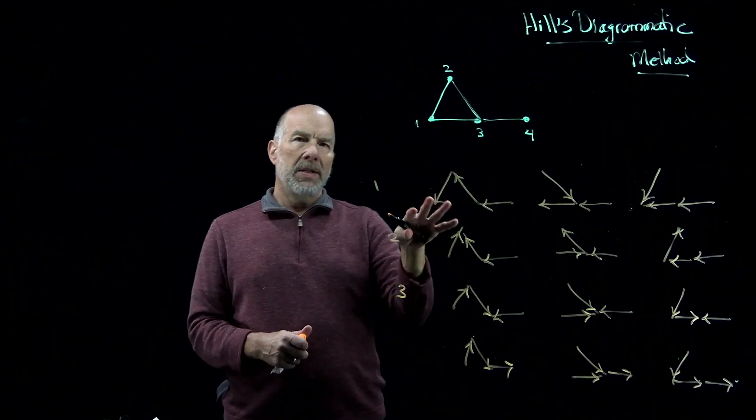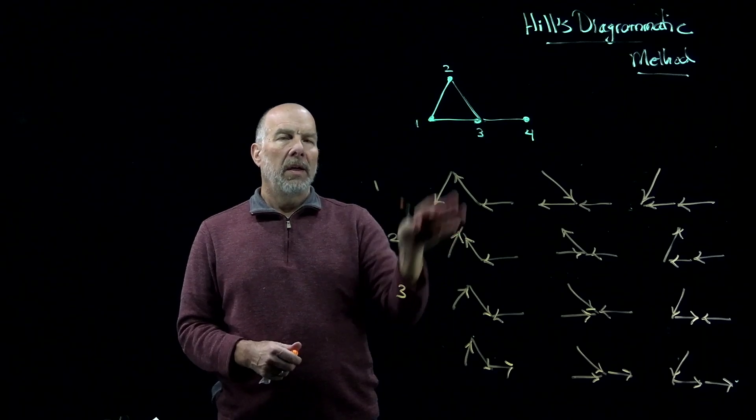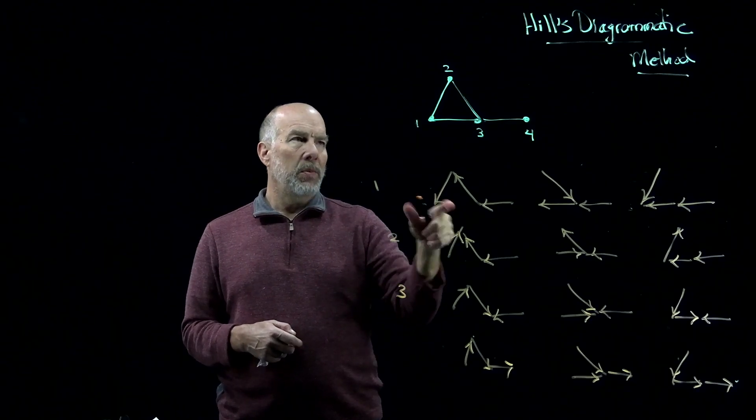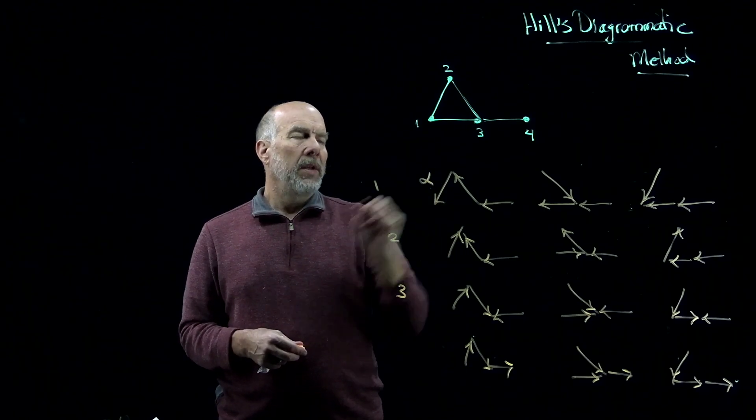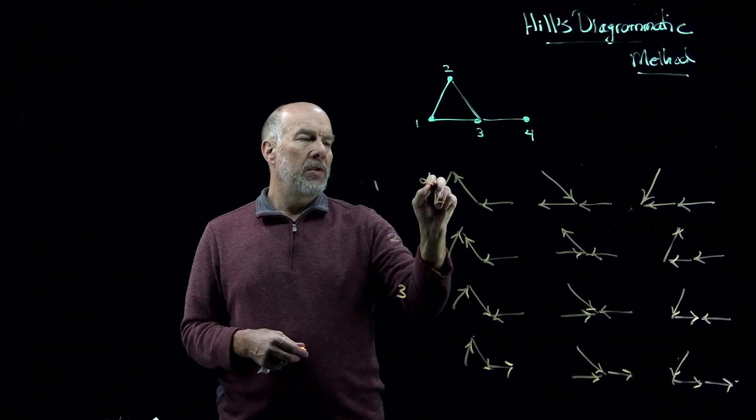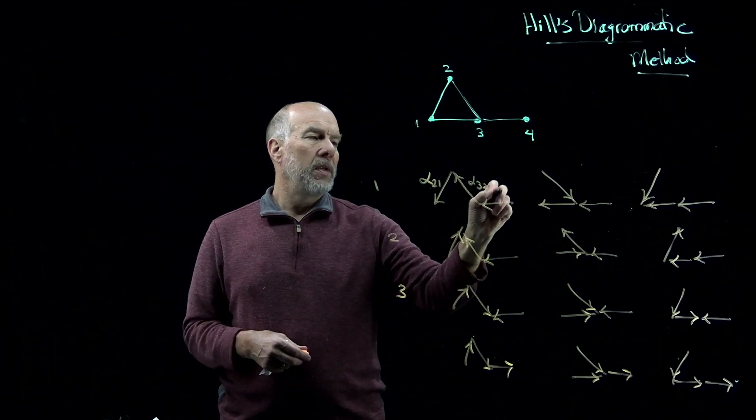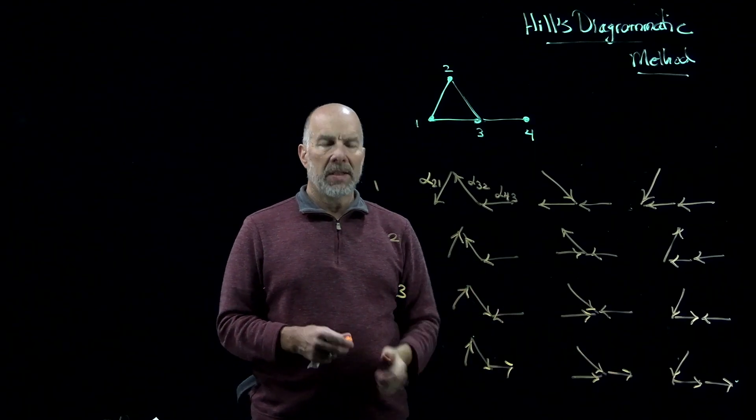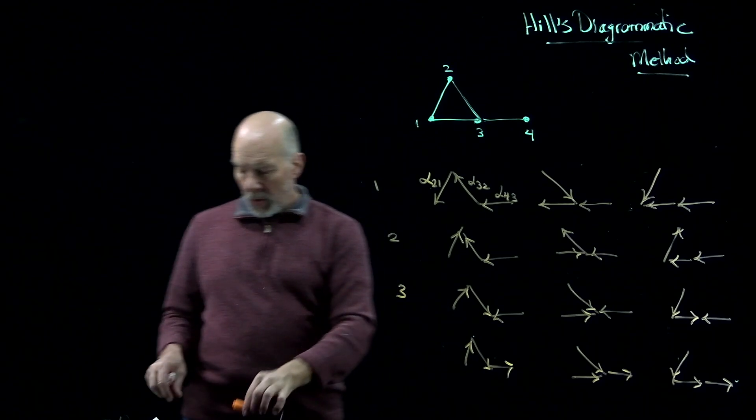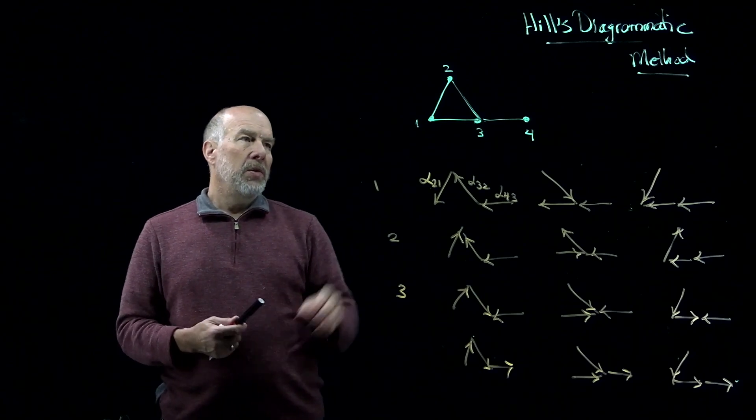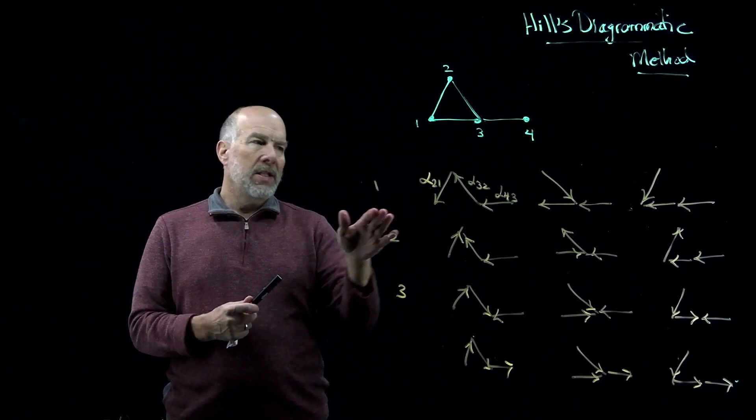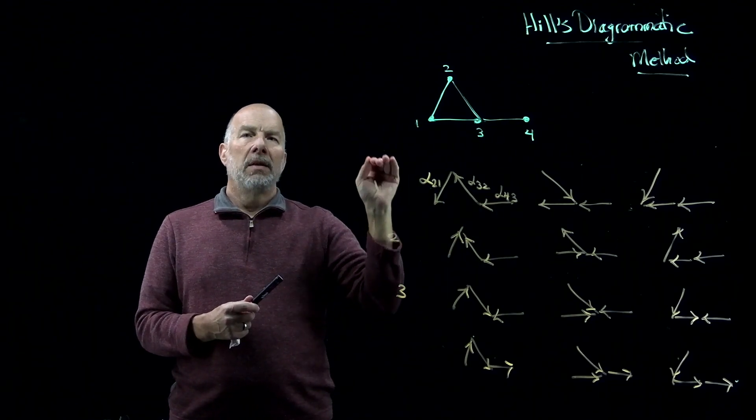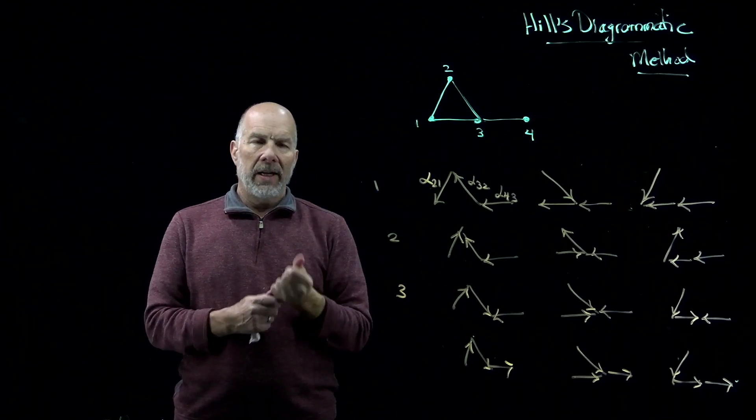Now remember that each one of these rooted spanning trees of our graph corresponds to a monomial. For example, this one corresponds to the monomial that would have factors alpha 2,1, alpha 3,2, and alpha 4,3. That would be easy to write down for each of these. And then, the weight associated to each vertex that we're going to use is actually the sum of all these monomials. It's the sum of the weights of all the rooted spanning trees rooted at a given vertex.